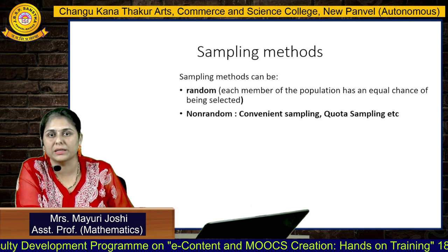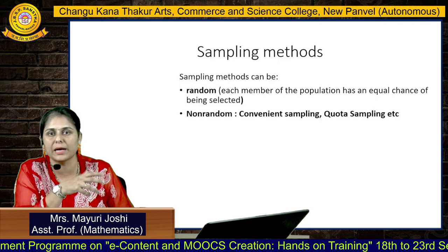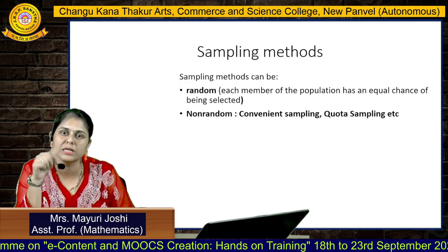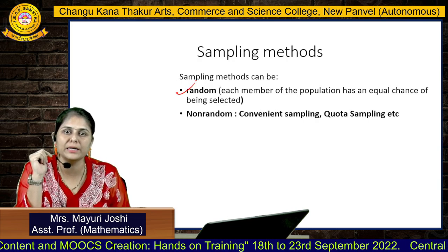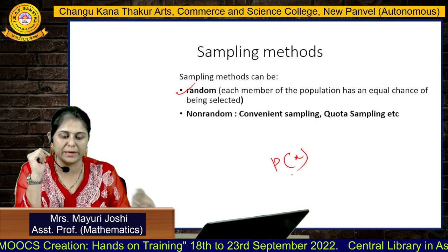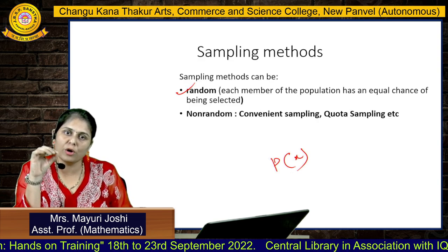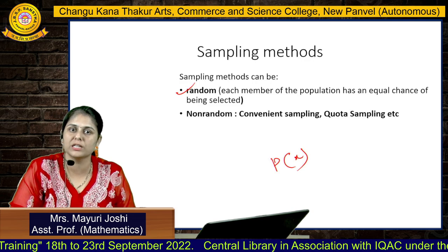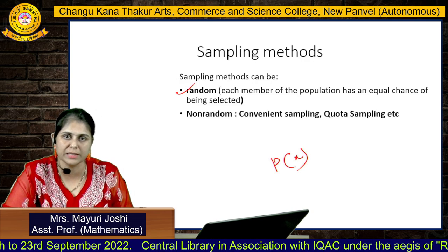There are sampling methods. Random samples can be taken using two methods. The first one is random sample. A random sample defines probability — it is associated with probability. Each member of the population has an equal chance, meaning equal probability of being selected in the sample.